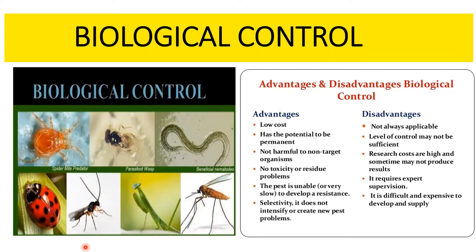Why do we need biological control? Most farmers use chemical methods to control pest problems, but there are disadvantages. First, the chemicals may be nonspecific and kill beneficial insects. Second, pests may develop resistance to the pesticide. Third, pesticides may enter the food chain, accumulate and harm other organisms.